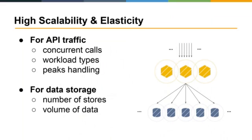Next: high scalability and elasticity. We want our platform to cope with increasing API traffic — in terms of concurrency, various workload types (read-only, write-only, or mixed), and the ability to handle peak loads easily. Same for data storage: the ability to host many data stores for customers and their projects, and to grow as they store increasing amounts of data. Elasticity and scalability in many dimensions.